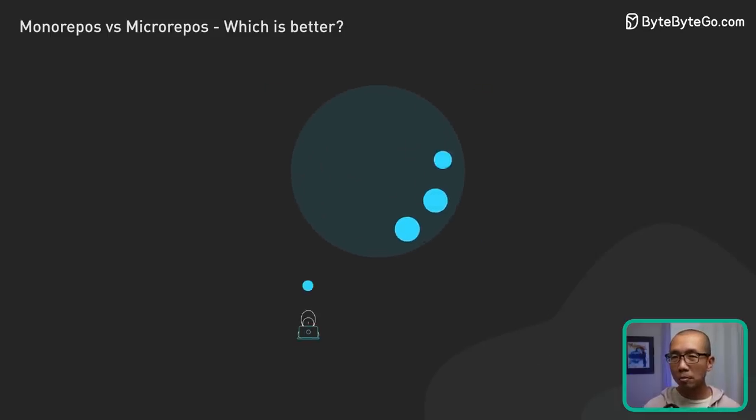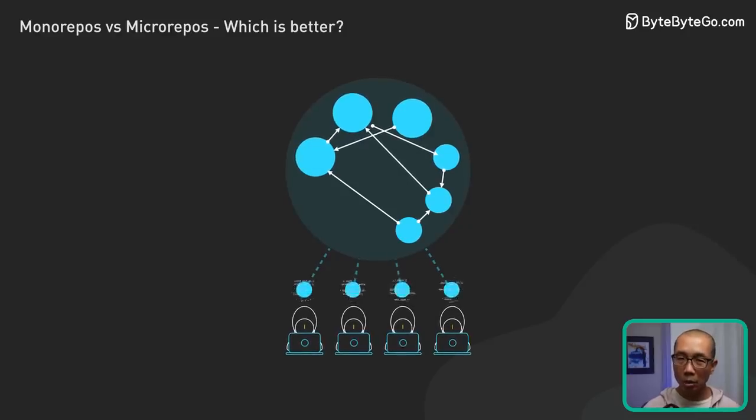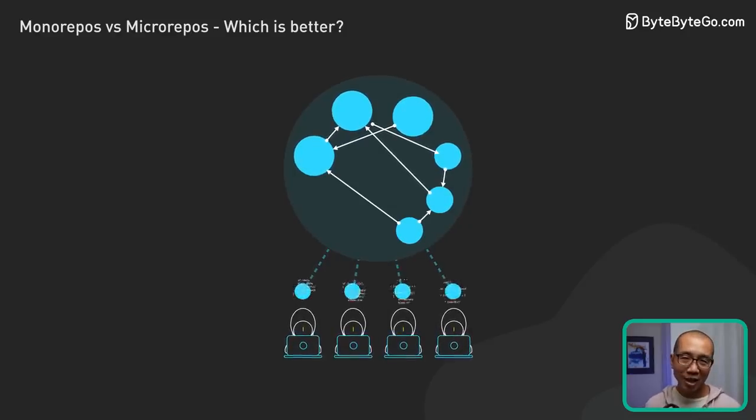Just imagine, in Google's monorepo, there are billions of lines of code all under one roof. Sounds pretty intense, right?